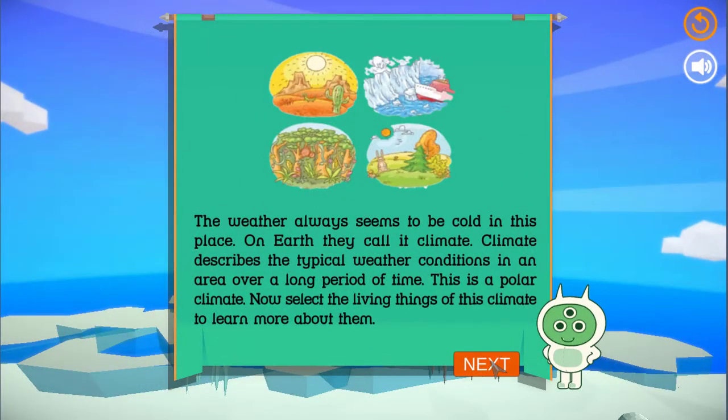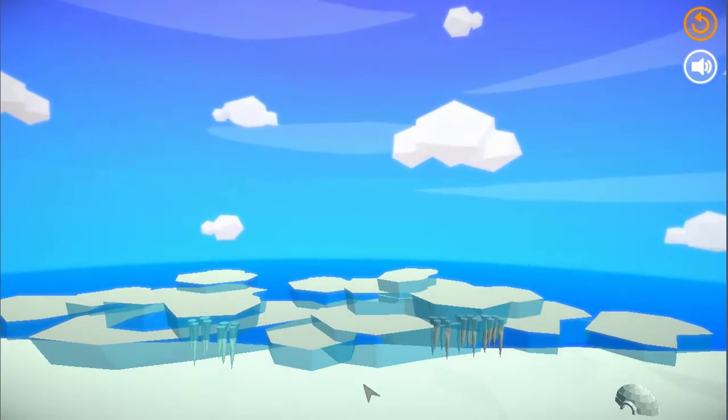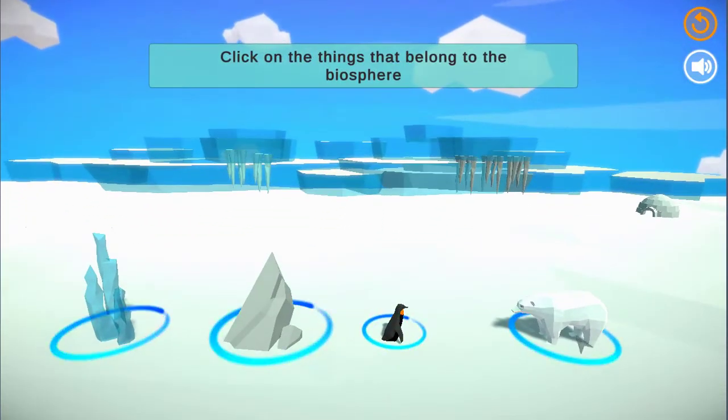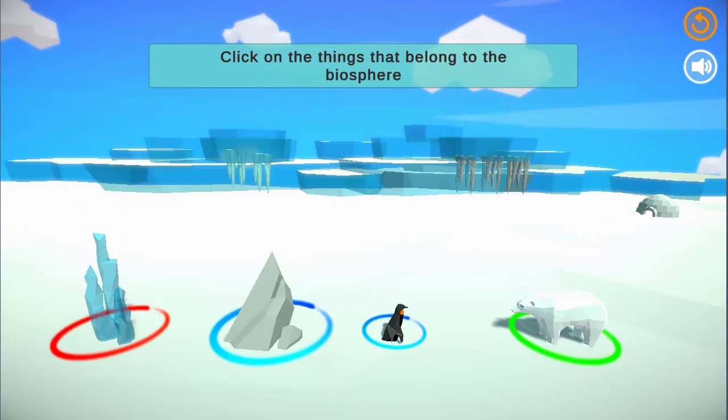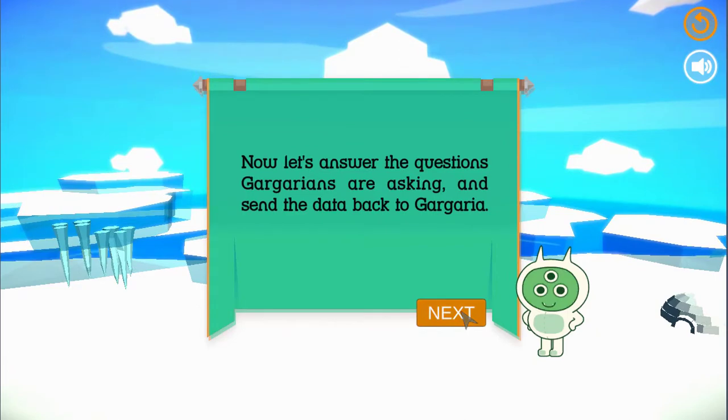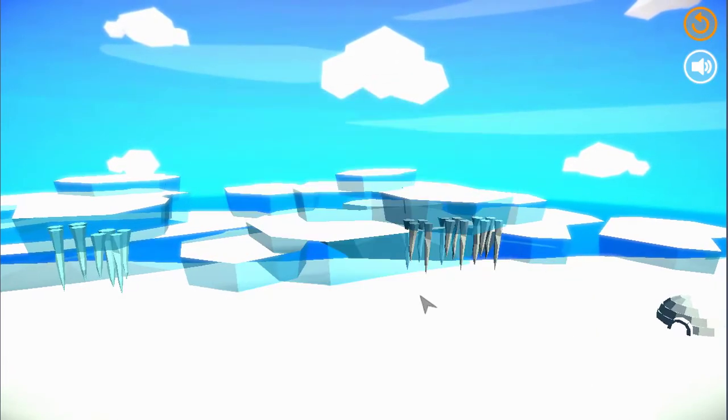The weather always seems to be cold in this place. On Earth they call it climate. Climate describes the typical weather conditions in an area over a long period of time. This is a polar climate. Now select the living things of this climate to learn more about them. Now let's answer the questions Gargarians are asking.